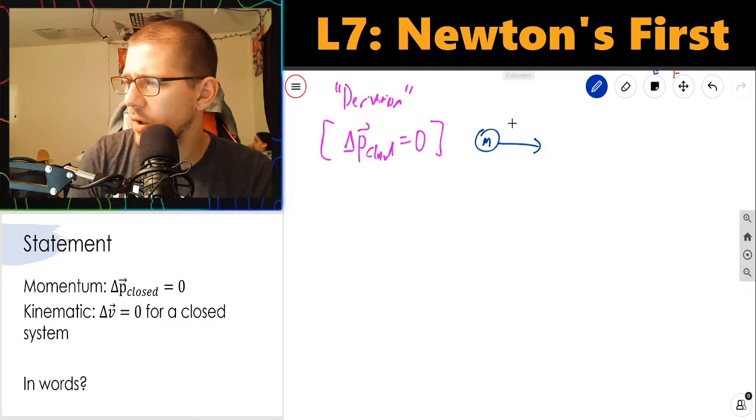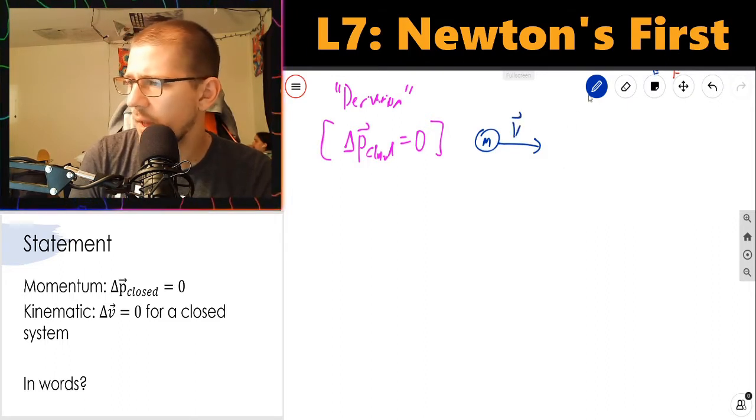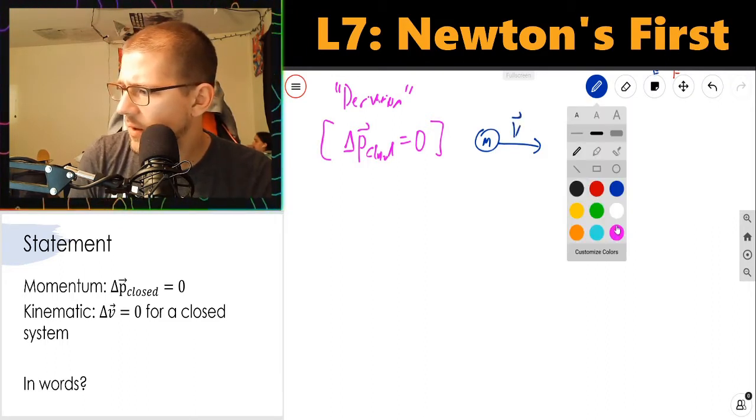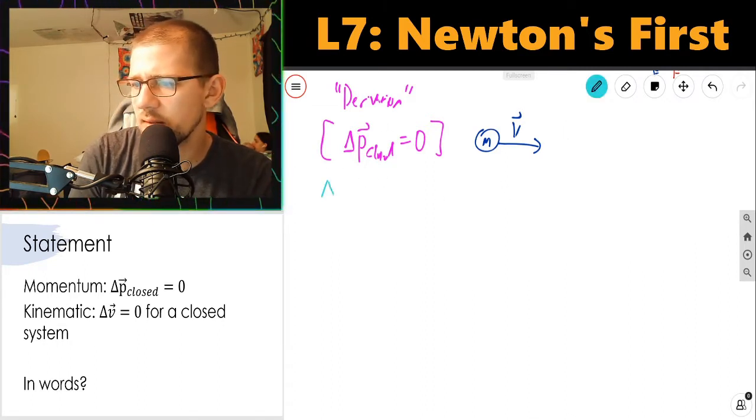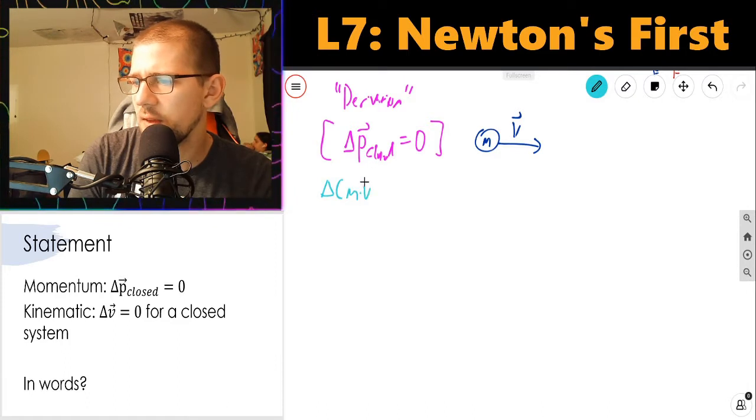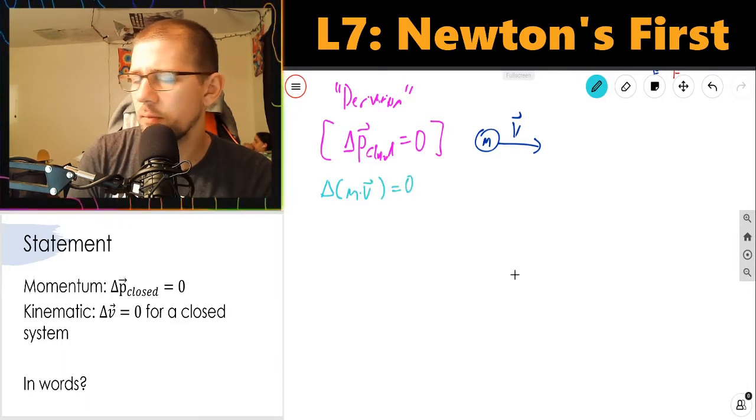So if I've got a single particle moving with some velocity v, then I know that its momentum is just mv. So I can rewrite the left-hand side of this equation as Δ(mv) = 0.